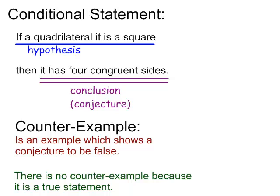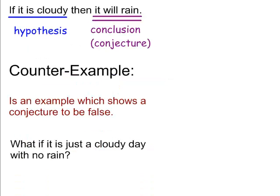There are no counterexamples for that one. Here's another sentence: if it is cloudy, then it will rain. Well, a counterexample would be: what if it's a cloudy day and there's no rain? So this is not a true statement.